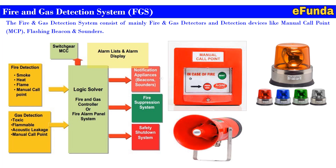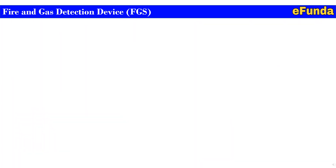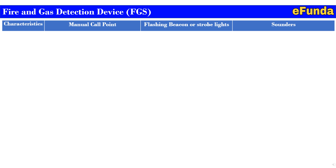In this series we have already created videos on detectors, and now we are going to cover all the other detection devices as shown in the picture of the FGS system. Referring to the table below, we will discuss the characteristics of the manual call point, flashing beacon or strobe light, and the sounder, comparing them one by one in detail.